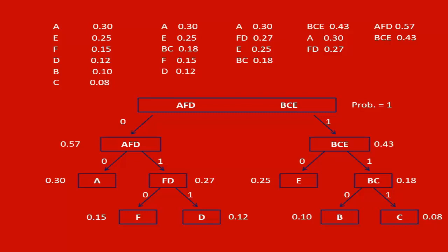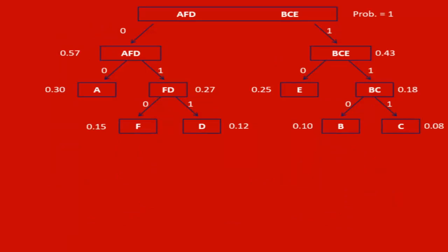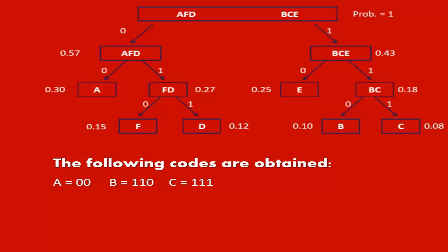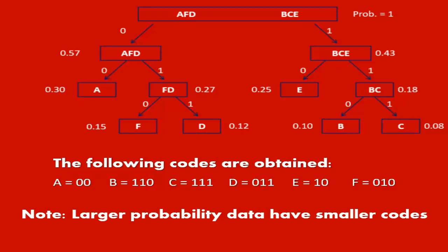From the given binary tree, the codes for source data is obtained as follows: For A, 00. For B, 110. For C, 111. For D, 011. For E, 10. For F, 010.